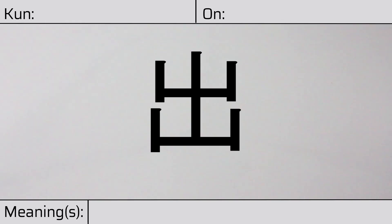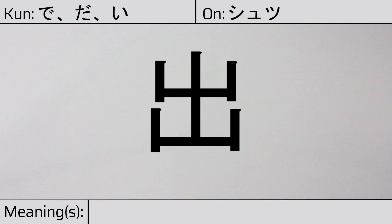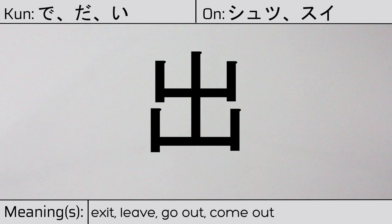Welcome to this lesson on Japanese kanji. Today, we'll be discussing this character. This kanji has kunyomi or Japanese readings of de, da, or i, and it has onyomi or Chinese readings of shitsu or sui. This character has the meanings exit, leave, go out, come out, put out, or protrude. Here is the stroke order.